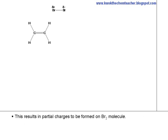This results in partial charges to be formed on the Br2 molecule. Hence, the Br on Br2 molecule gets a partial positive charge while the other Br carries a partial negative charge.